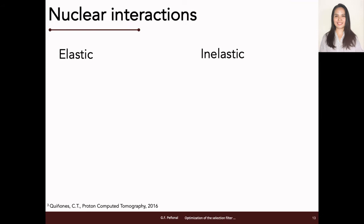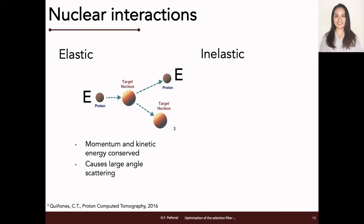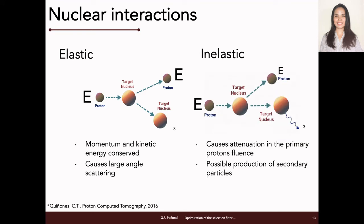When protons are incident on the atomic nuclei of the target material, the interaction can be elastic or inelastic. In elastic nuclear interaction, the energy is conserved; however, owing to the large mass of the target nucleus compared to the incident protons, the protons are deflected at larger angles. On the other hand, if protons undergo inelastic nuclear interaction, the energy is not conserved, causing large energy loss to protons, often stopping them inside the material and not exiting. This causes attenuation or reduced fluence of the outgoing primary protons and possible production of secondary particles.